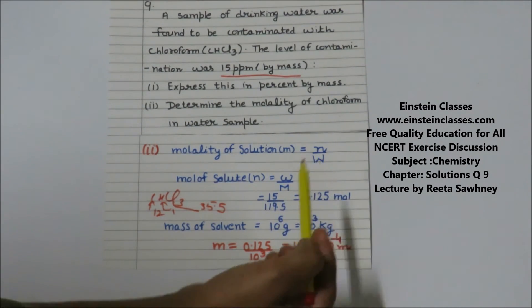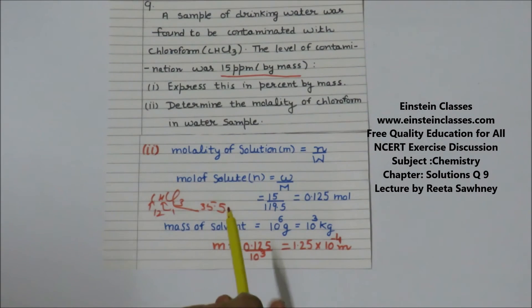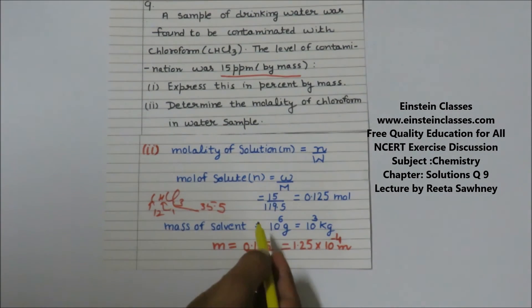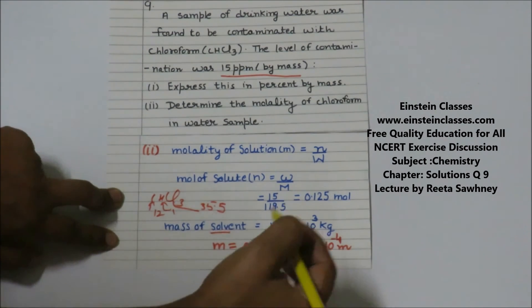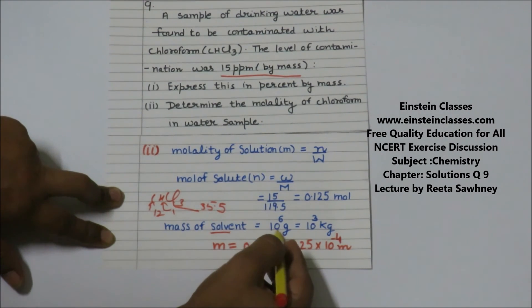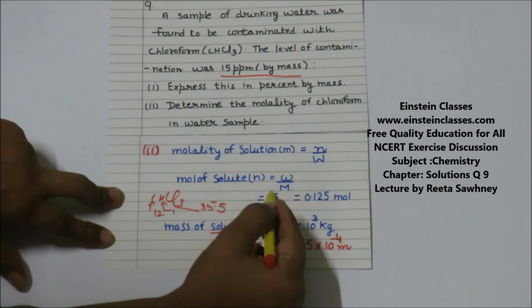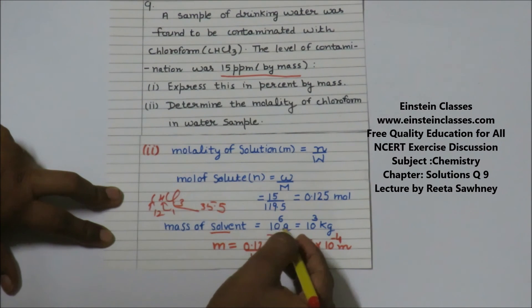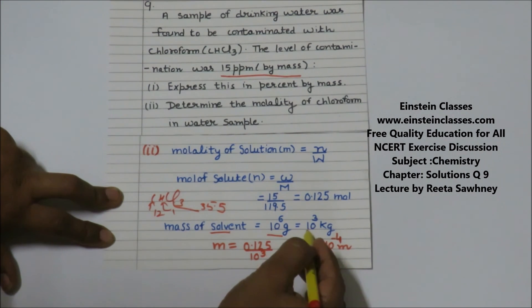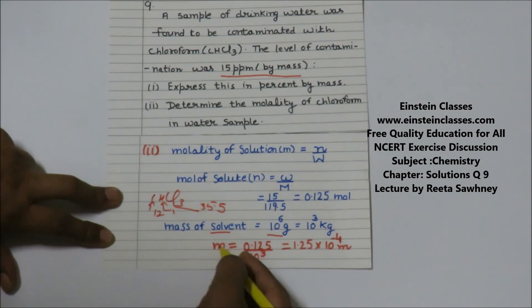For molality we need moles of solute divided by mass of solvent in kilograms. Since 15 ppm means 15 grams of chloroform in 10^6 grams of solution, the mass of solvent is 10^6 minus 15 grams. Since 15 is negligible compared to 10^6, the mass of solvent is approximately 10^6 grams, which is 1000 kg.